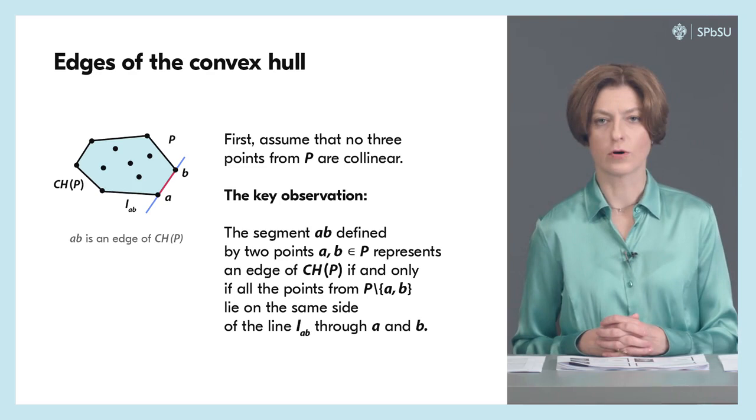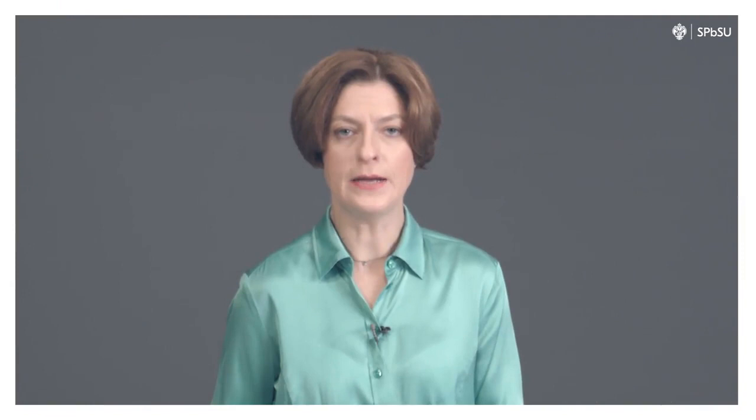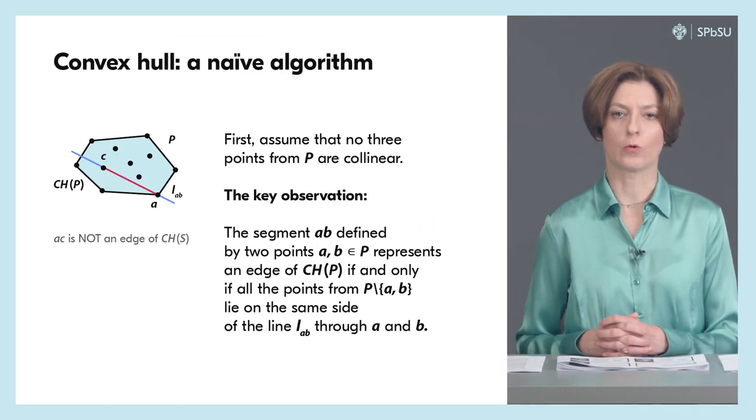For example, in the figure you now see on this slide, the segment AB represents an edge of the convex hull. But the segment AC you see now is not an edge of the convex hull, because two points from P lie on one side of the line through A and C, and seven points from P lie on the other side of this line.